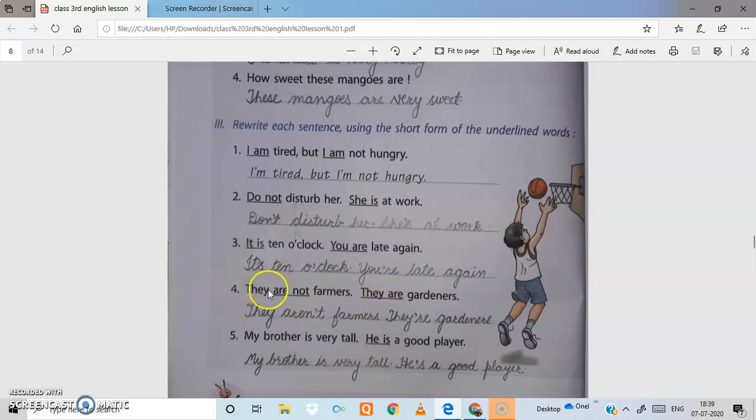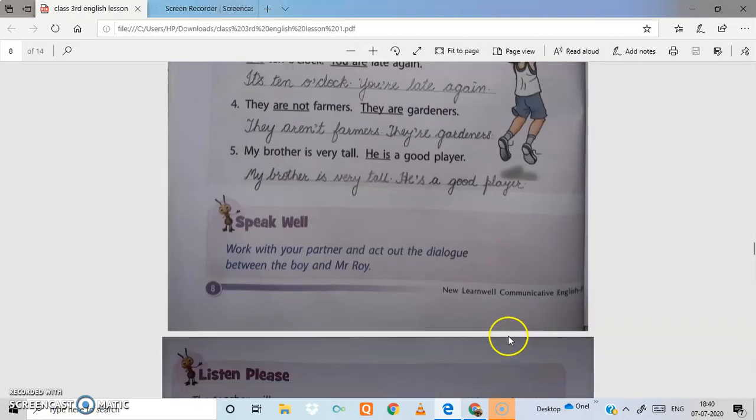You're late again - U apostrophe R E. They are not farmers, they are gardeners - they aren't farmers, they are gardeners. My brother is very tall, he is a good player - my brother is very tall, he's a good player.